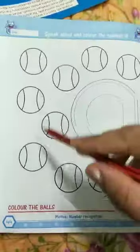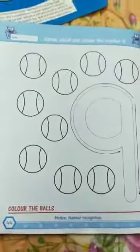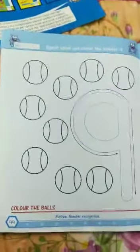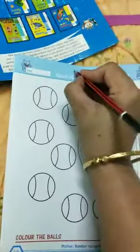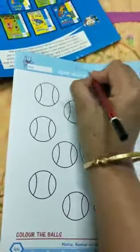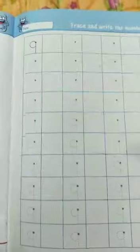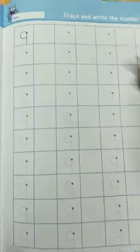What you have to do is color these balls in different colors of your choice. Now write the date here and your name. We will go to page number 45 and I'll show you how to trace number 9.